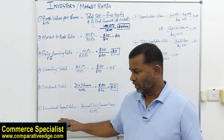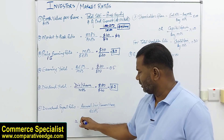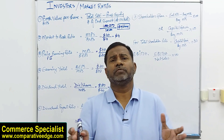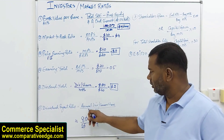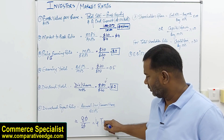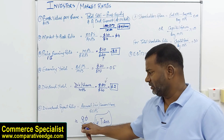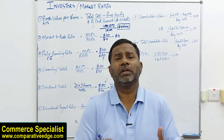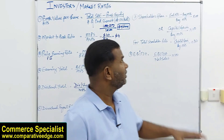The next ratio is dividend payout. The formula is annual dividend per common share divided by basic earnings per share. If annual dividend is $80 and EPS is $20, dividend payout is 4 times. This shows the percentage of earnings available to be paid as dividends — meaning whatever is earned, the dividend paid is four times that amount. Obviously, higher is better.